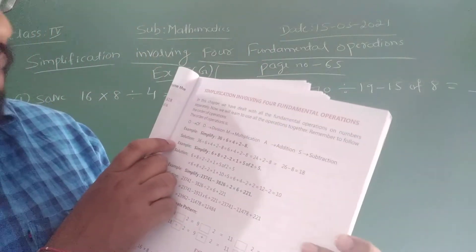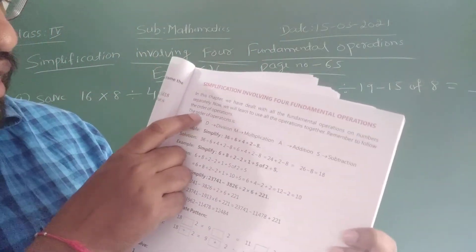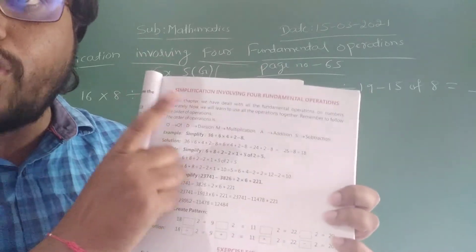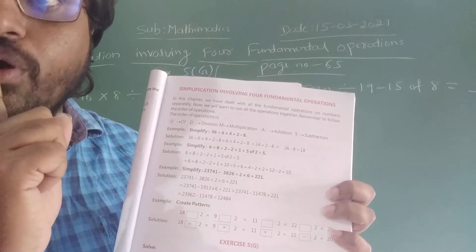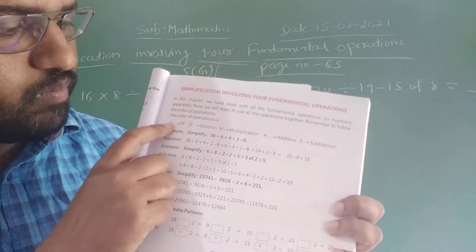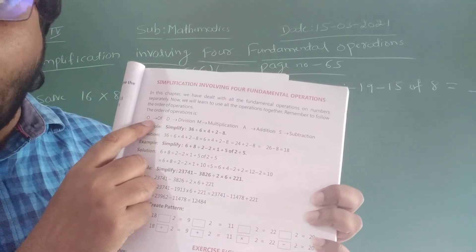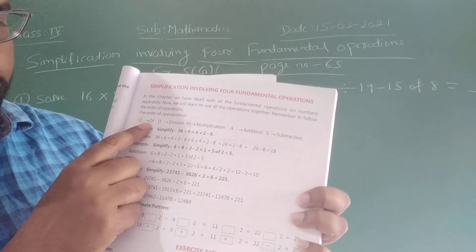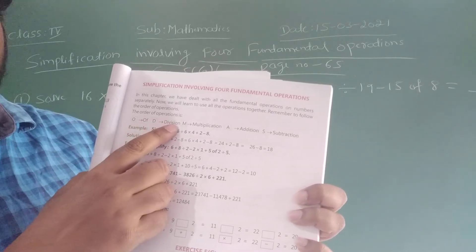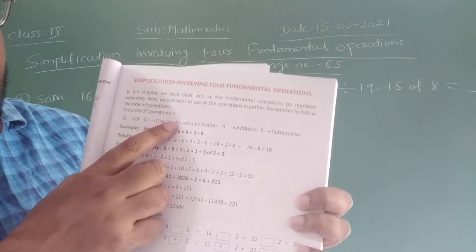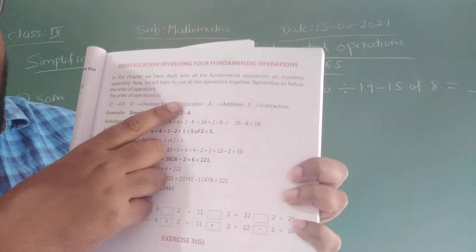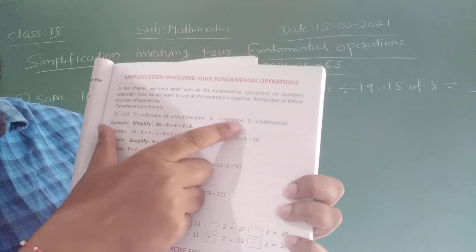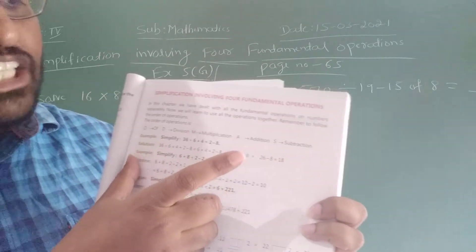See children, here you mainly have to remember the order of operations. You have to maintain this order: O — O means off. D means division. M means multiplication. A means addition. S means subtraction.